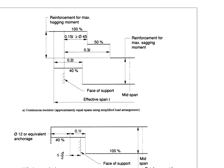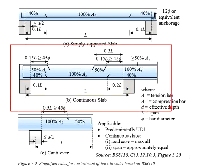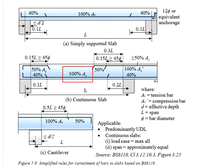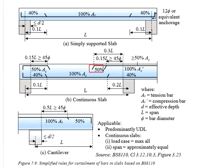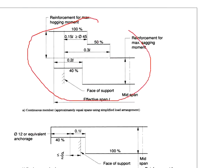Adopting these principles in the slab section, it looks something like this. 100% of the reinforcement at the mid-span; near to the support, you may reduce to 40%. Curtailment can be done at 0.2 times the effective length. As for the top reinforcement, 100% top reinforcement should be placed at the support and extended to a distance of 0.15 times the effective length, counting from the face of the support. This distance should be at least greater than 45 times the bar diameter. Then you may reduce the reinforcement to 50%, which may be curtailed and stopped after 0.3 times the effective length.